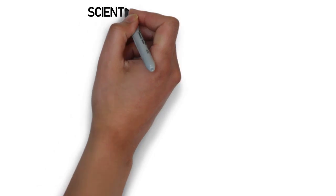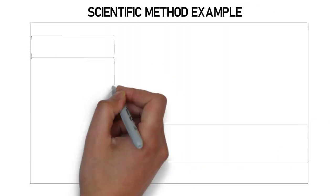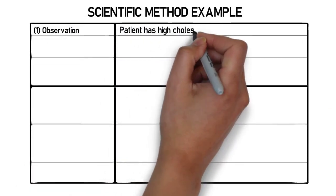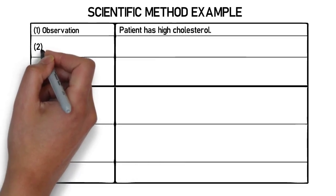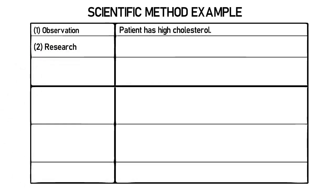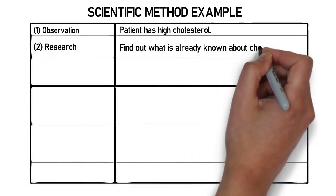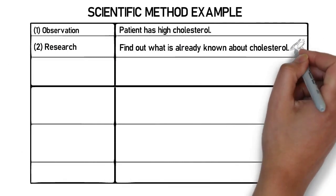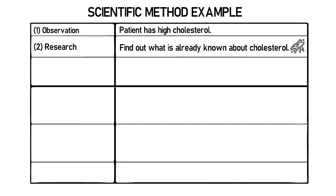Let's look at an example on how to apply the scientific method to a medical scenario. We first make an observation or ask a question. In this case, we noticed that a patient has high cholesterol. We then perform some background research. What do we already know about cholesterol? Do we know what causes high cholesterol? Do we know of anything that can be used to lower it?